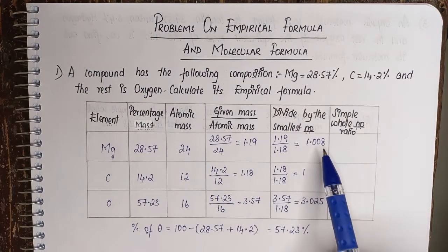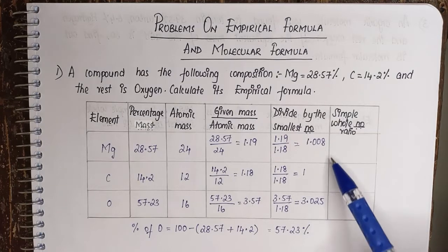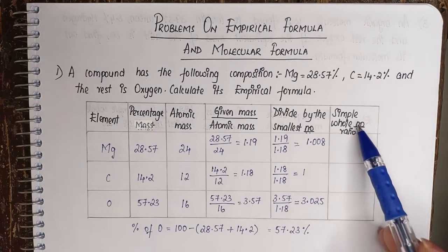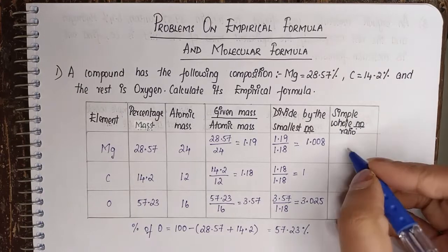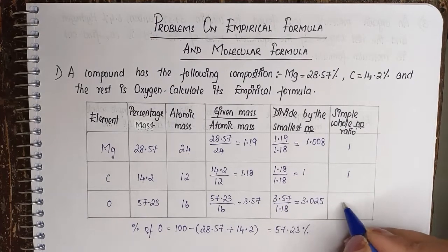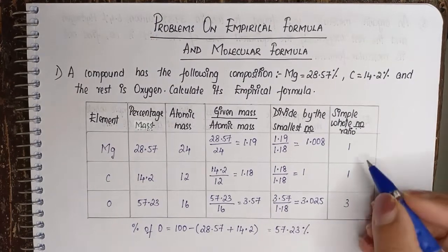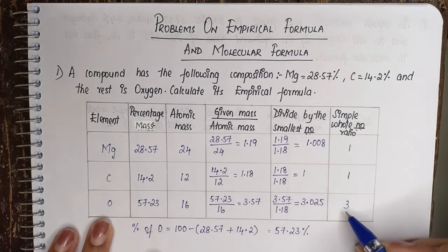So now that we have all these values - 1.008, 1, and 3.025 - these have to be converted to simple whole number ratio. 1.008 can be written as just 1. This remains the same. 3.025 can be written as 3. So our ratio for magnesium is 1, carbon 1, and oxygen 3.